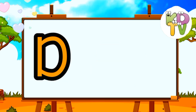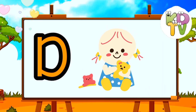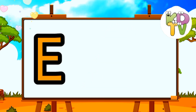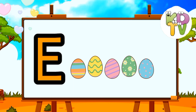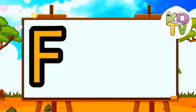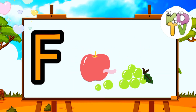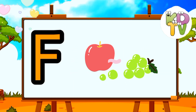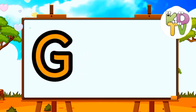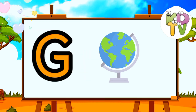D is for Doll. E is for Egg. F is for Fruits. G is for Globe.